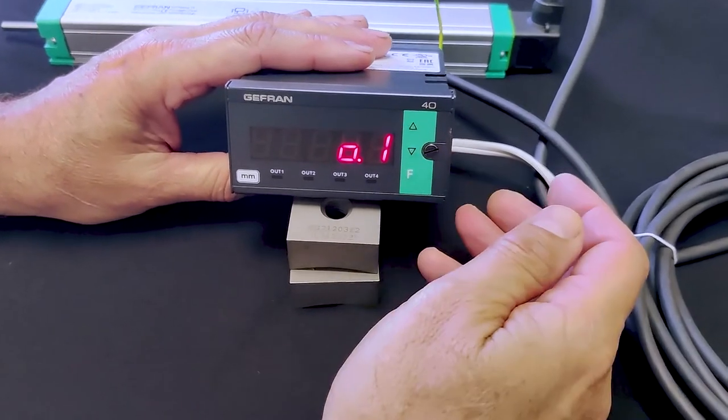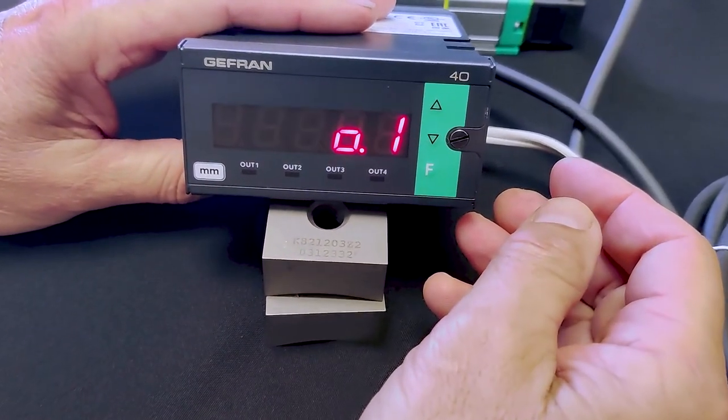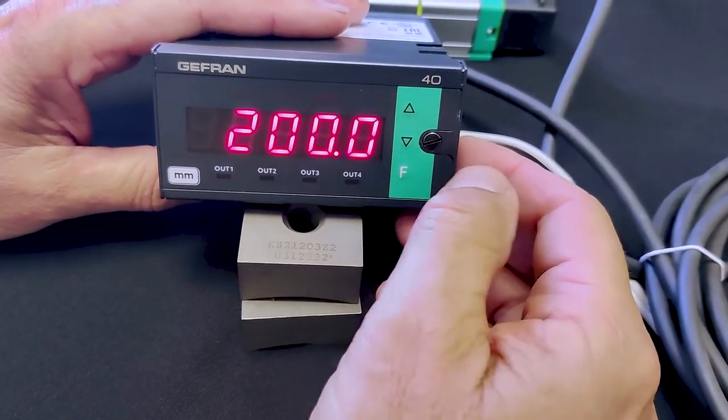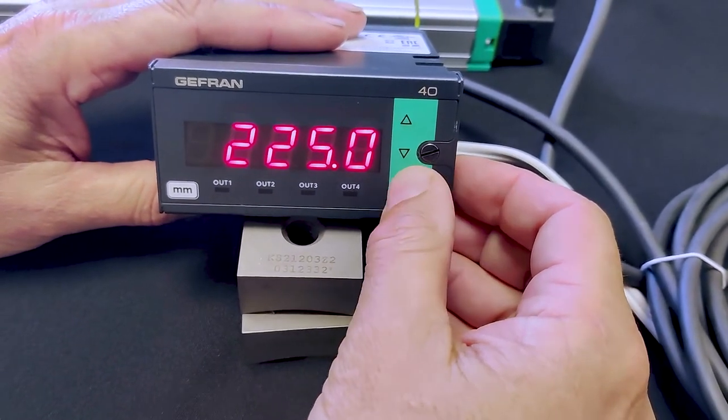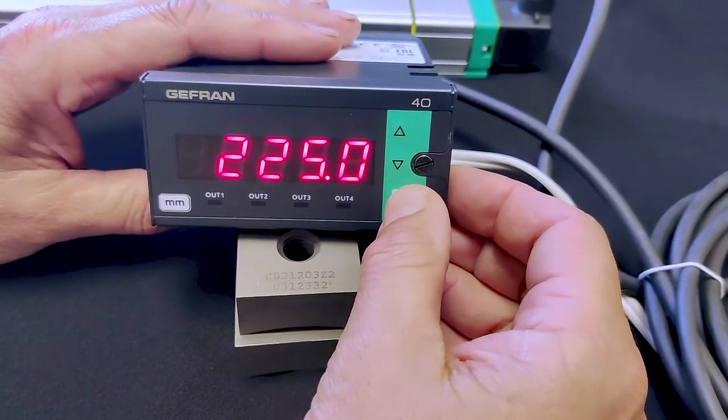To set the alarms, press and release the F key. This is the first alarm which I have set to 200. Second alarm and third alarm are set to 225.